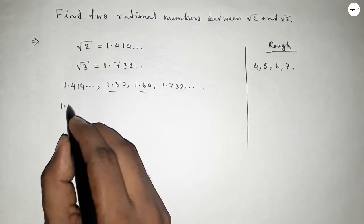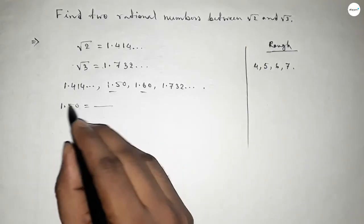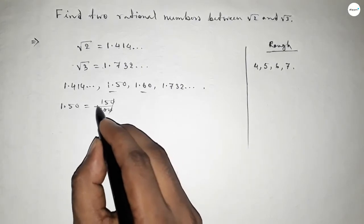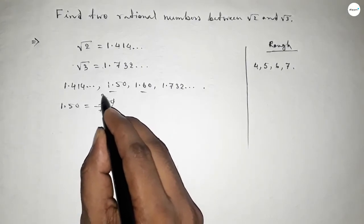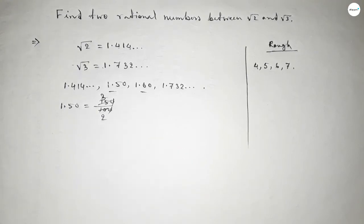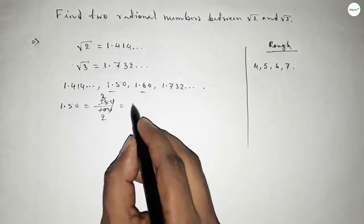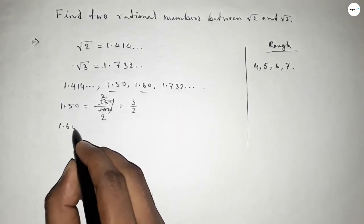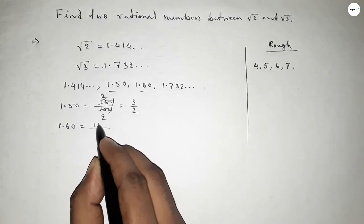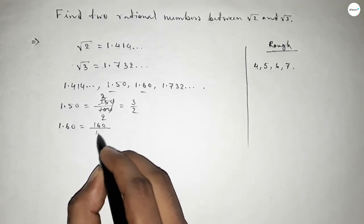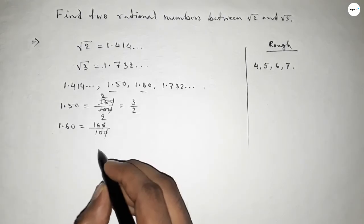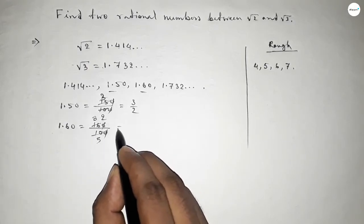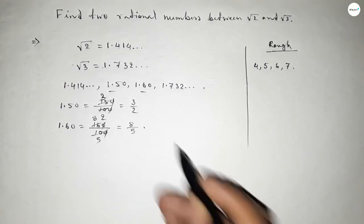Now simplifying this, so this is over 100, and simplifying this, so this is 3 over 2, and this is a rational number. Now 1.60, simplifying this, so you can write 1.60 over 100. Now simplifying this, so if you divide both numbers by 2, this is 8 over 5.